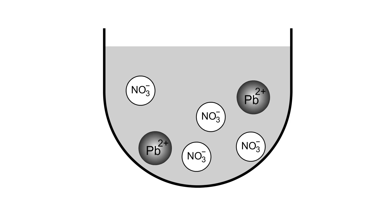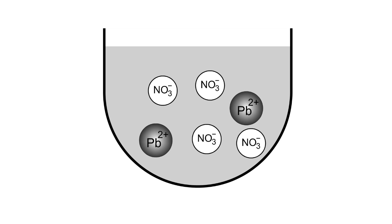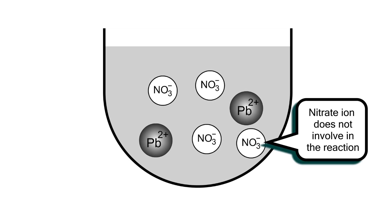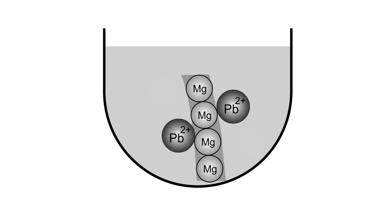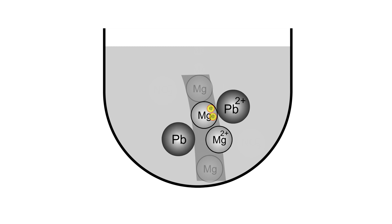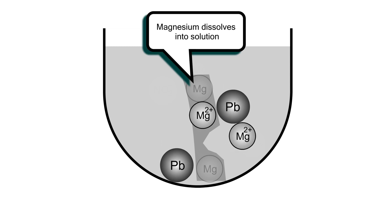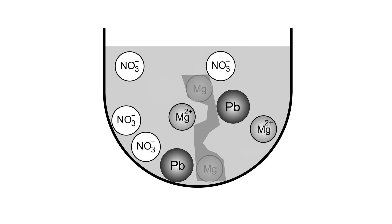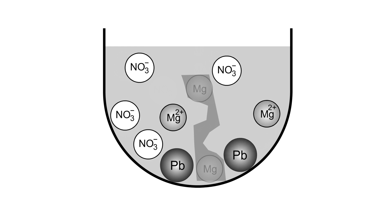Lead two nitrate solution contains lead two ions and nitrate ions. Nitrate ions are spectator ions that are not involved in the reaction and are ignored. Magnesium donates two electrons to lead two ions, producing magnesium ions and lead metal. Magnesium dissolves into the solution and becomes thinner. Lead metal can be seen as a gray deposit that eventually settles at the base of the test tube.